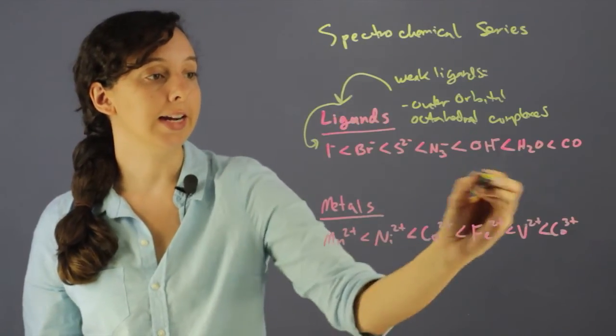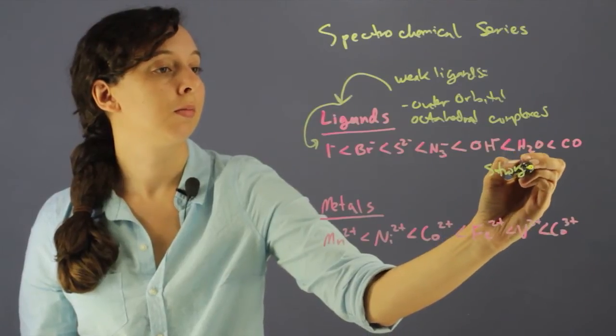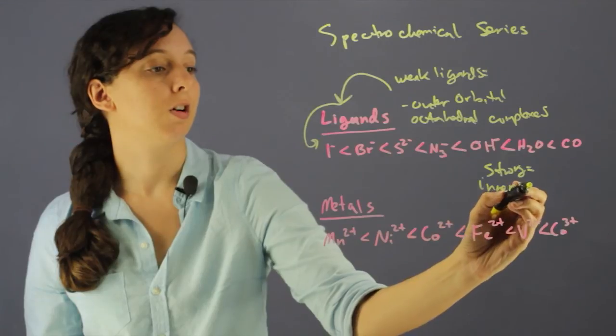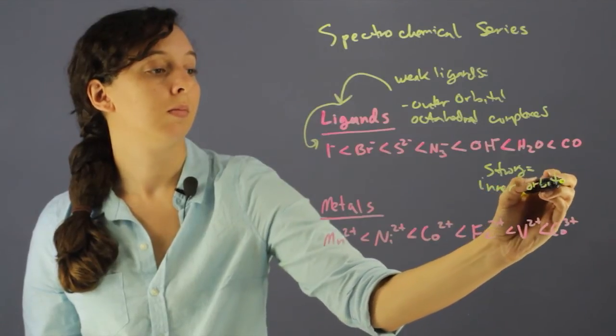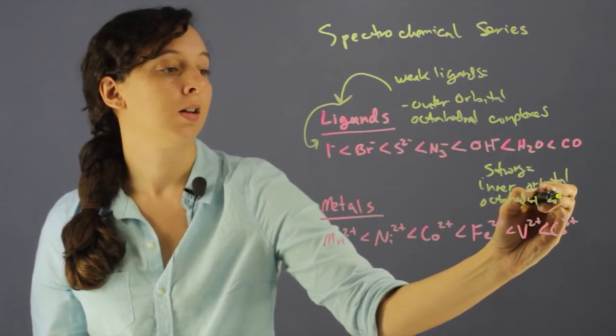Versus the ones on the right-hand side that are stronger, the strong ones, they form inner orbital octahedral complexes.